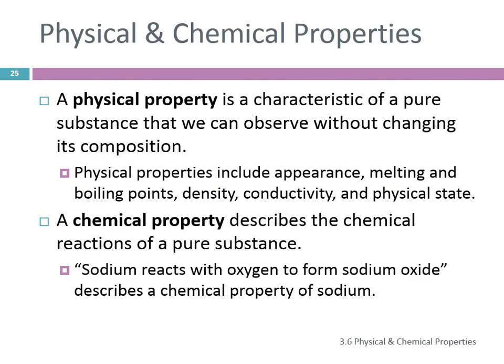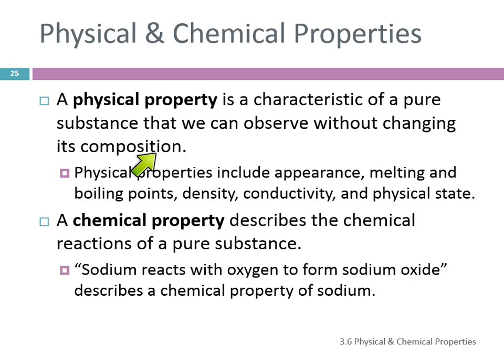Physical and chemical properties. A property is a characteristic of something, and we divide these characteristics into two groups: physical and chemical. A physical characteristic is something we observe without changing the composition.